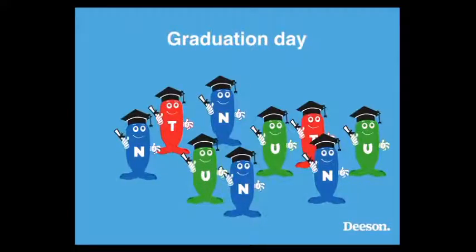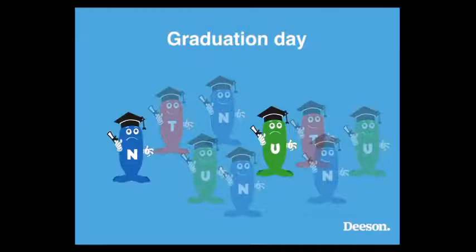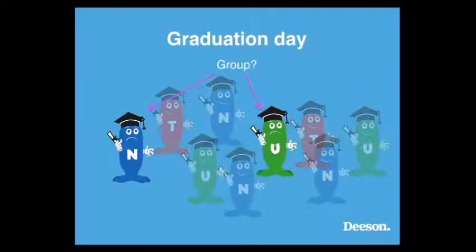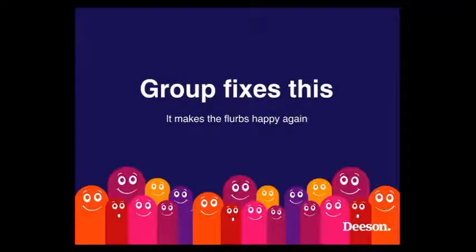Come graduation day, they're all really excited — they can go to a website to work as a node or as a taxonomy term. Most of them succeed, most actually get a job. But some of them aren't recruited to be a node or a user — they're told that they're groups. And they're like, what the hell's going on? I studied to become a node or a user, and now you're telling me I'm a group? I don't know how to be a group. And then someone tells them, yeah, we'll just give you some tools that allow you to be a group. But that doesn't make them happy — look at them, those are two sad Flerbs. What Group does is it fixes this, it makes the Flerbs happy again.